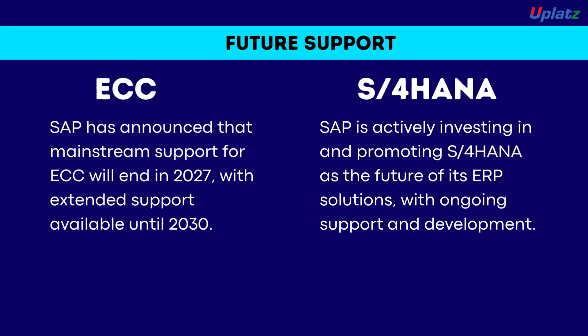Planning for the future: SAP has announced that mainstream support for ECC will end in 2027. SAP is actively investing in and promoting S/4HANA as the future of its ERP solutions, with ongoing support and development.